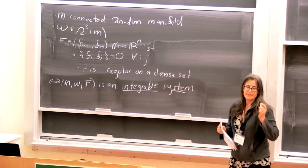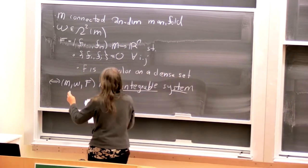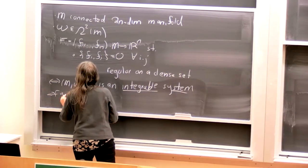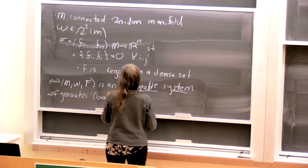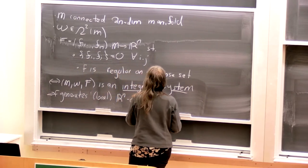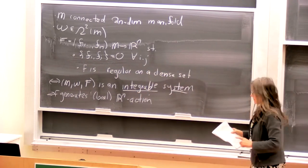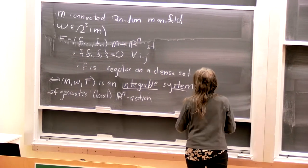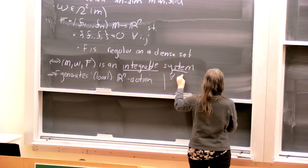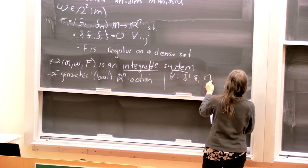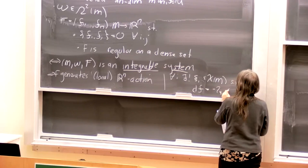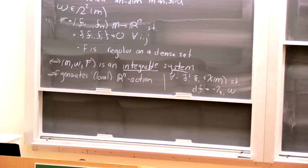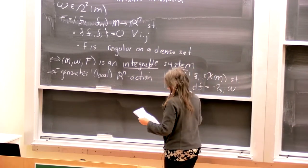And so this will be the basic objects that I'm working with. This implies that f generates a local R^n action, but actually it will always be an R^n action in every case that we consider. For all i, there exists a unique vector field on M such that df_i is minus i_xi omega. Because they Poisson commute, they generate a local R^n action.